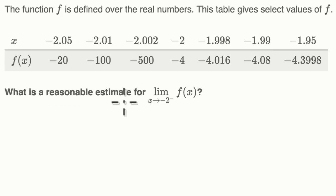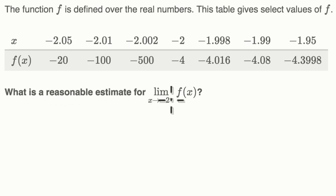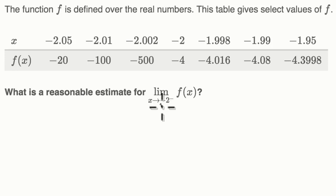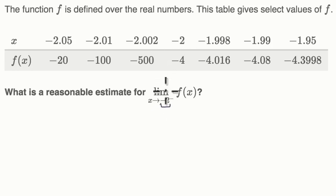What is a reasonable estimate for the limit as x approaches negative two from the left? So this is confusing — you see these two negative signs. This first negative sign tells us we're approaching negative two.